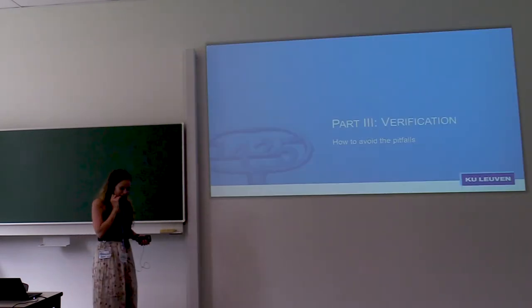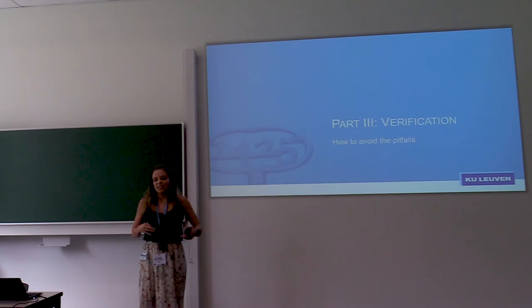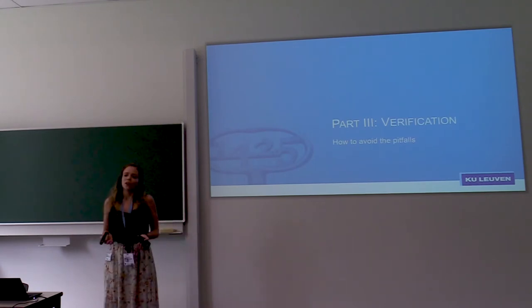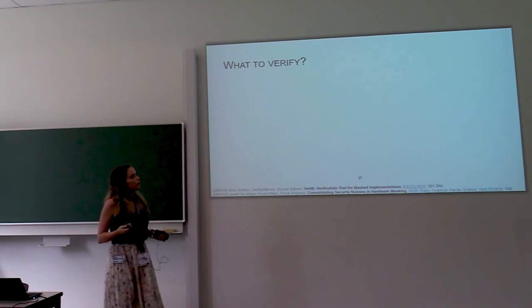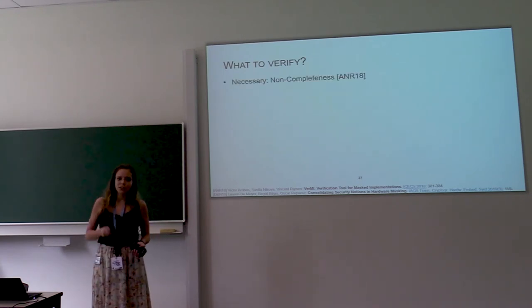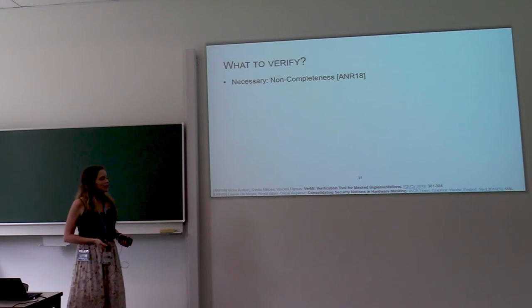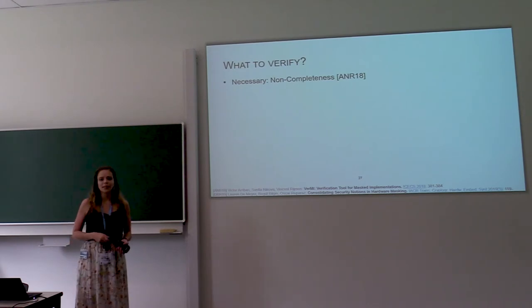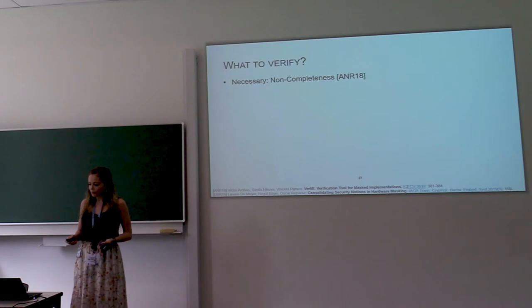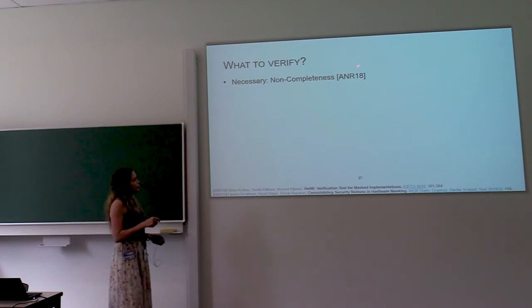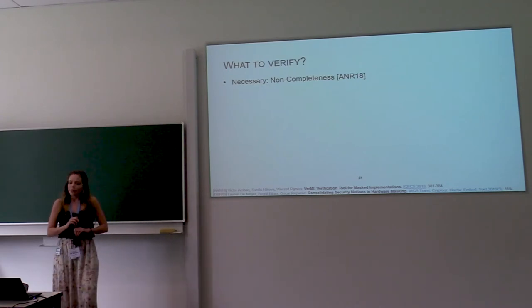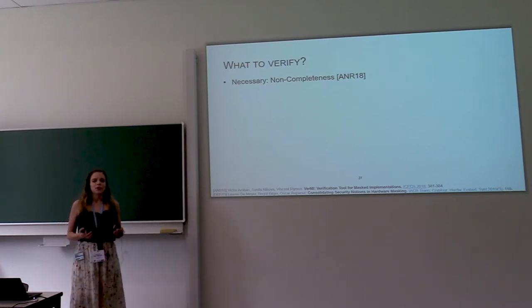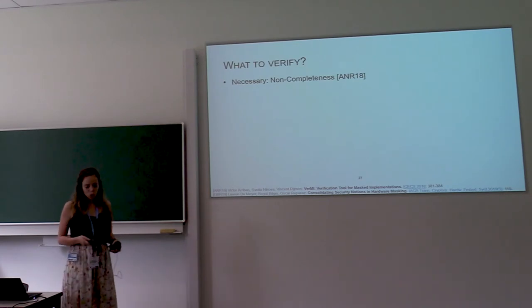So then, if you're making a masked implementation, it's quite difficult to not make any mistakes, right? So this is why verification is a very important part of masked implementations. So what are we verifying? Well, non-completeness would be a good place to start, because it's a very important requirement. And if you don't satisfy non-completeness, chances are high that your implementation is going to leak. So there's already a very efficient tool available for this. But keep in mind that non-completeness alone is not sufficient. That's not going to guarantee that your implementation won't leak. So what is sufficient?